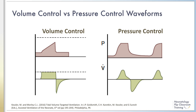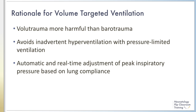In volume control ventilation, the flow is delivered in a square waveform. This indicates flow stays constant until the target volume is reached at the end of inspiration. In pressure targeted ventilation, the flow waveform is sinusoidal and the opening pressure is reached quickly. After the target pressure has been reached, flow decelerates rapidly until inspiration is complete.